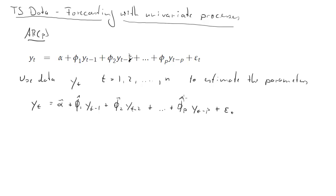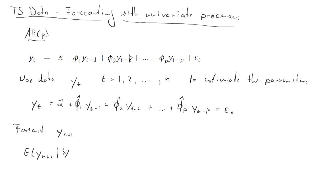The question now is: what do we do for forecasting? We have used Y_N, so let's say we want to forecast one step ahead: Y_{N+1}. That means we want the expectation of Y_{N+1} conditional on having all observations up to time N available.